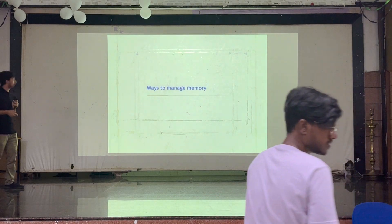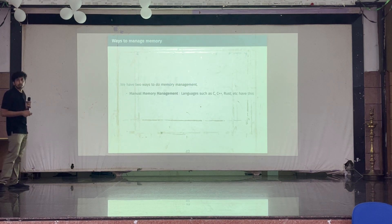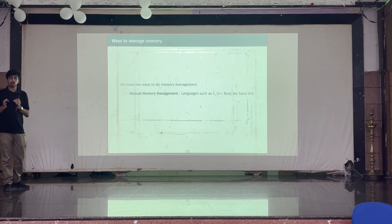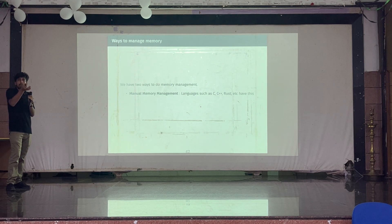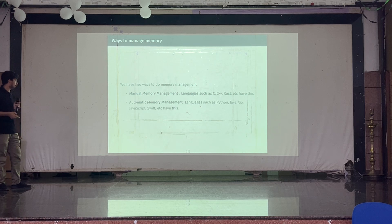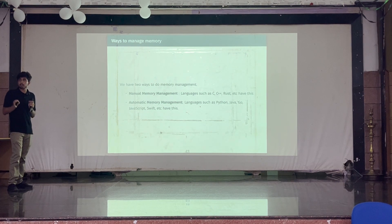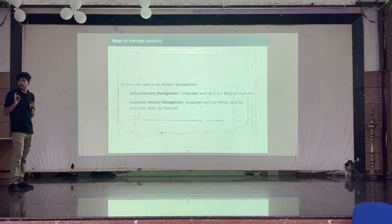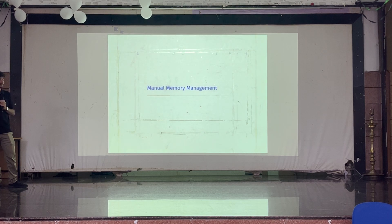We will now cover ways to manage memory. There are two ways. One is manual memory management — languages like C and C++ where you do malloc, free, new, and delete yourself. The other is automatic memory management, where the language helps you out — it does all the allocations and deallocations automatically. You do not ever need to think about memory. Languages like Python, Java, and Go all use automatic memory management.